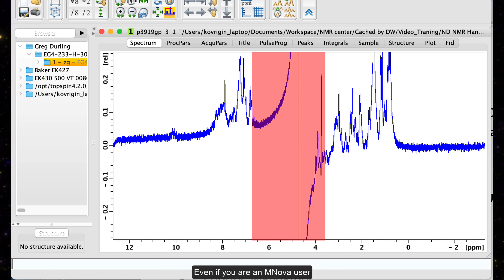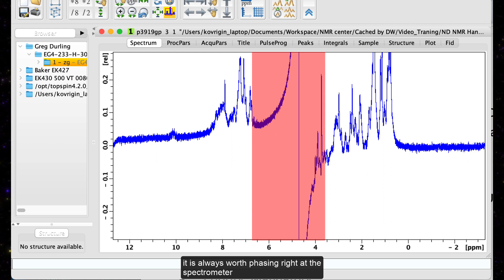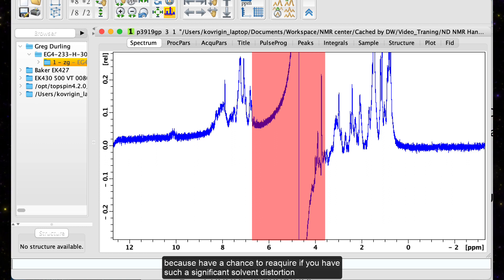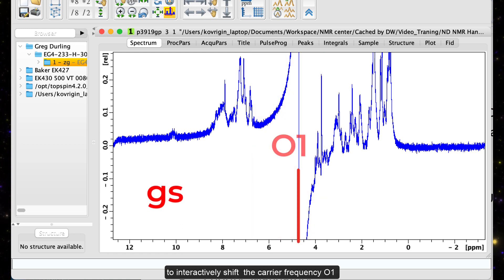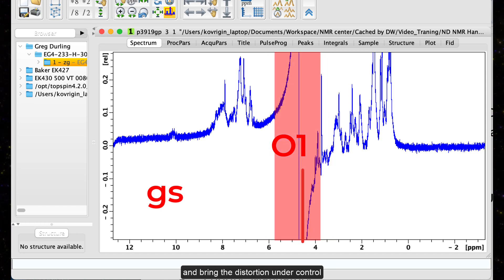Even if you are an IMNOVA user, it is always worth phasing at the spectrometer, because you have a chance to reacquire if you have such a significant solvent distortion. In this case, you will use a GS tool in Topspin to interactively shift the carrier frequency O1 and bring the distortion under control.